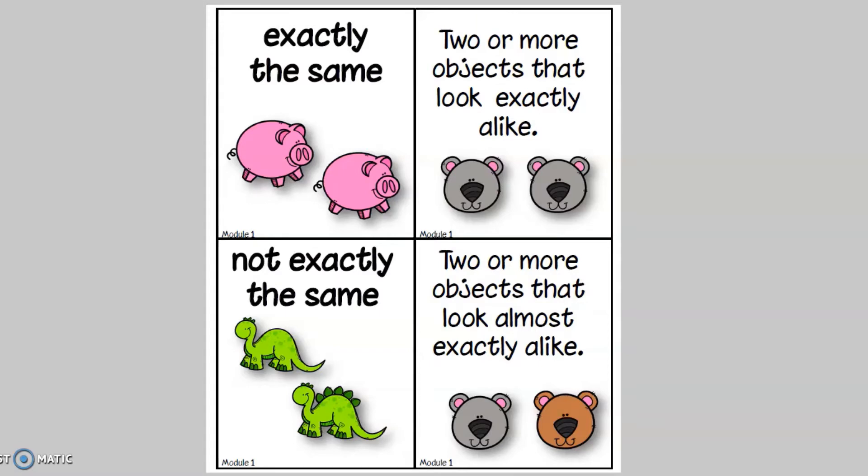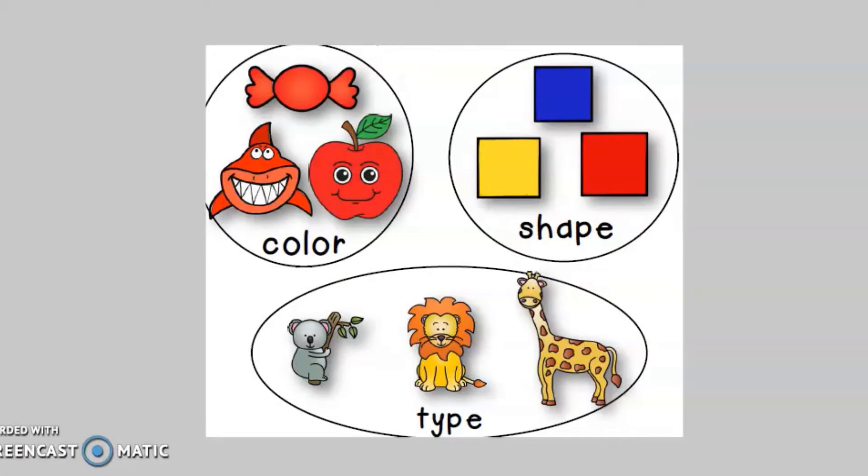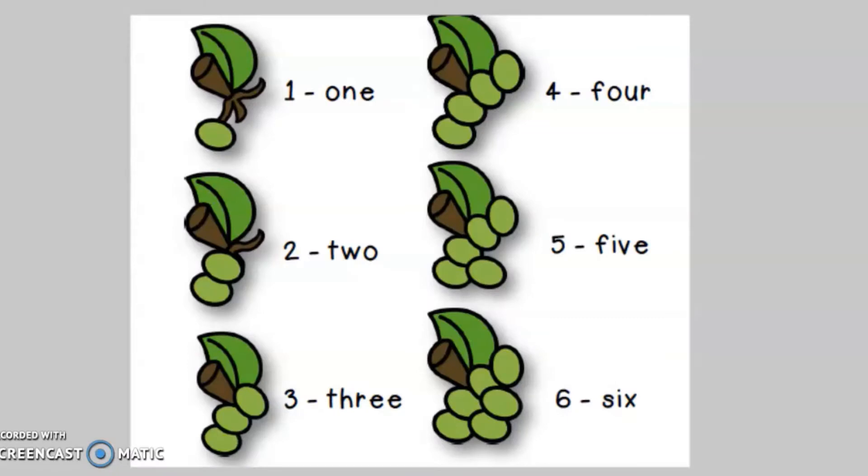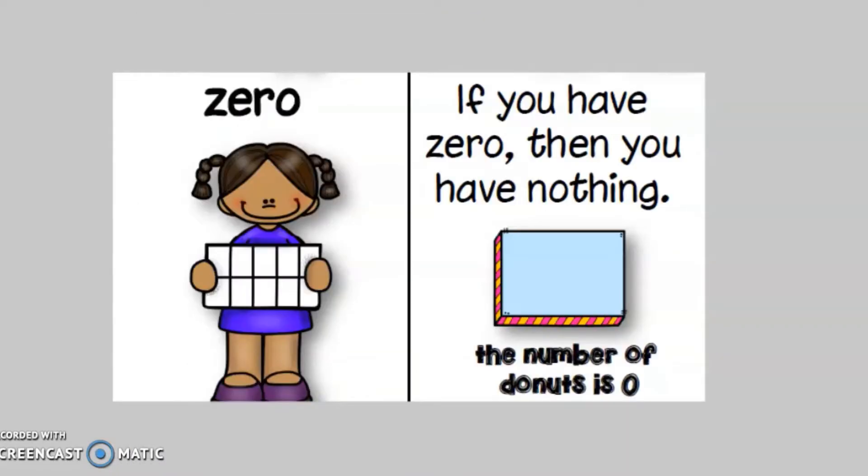Now let's talk a little bit about what we learned in all of module one of Eureka Math. In lessons one through three we learned how to observe things and see if they are exactly the same or alike or if they are not exactly the same that they're almost alike. They're similar. And then we put things into categories. In lessons four through six we practiced sorting things by color, shape, and type. We also practiced counting and talked about the meaning of zero. If you have zero then you have nothing.